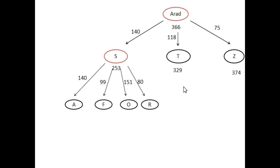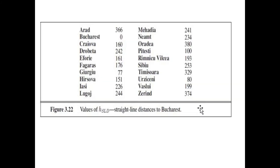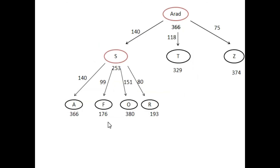We will calculate f(x) for each of these nodes. f(x) is equal to h(x). Looking at the heuristic values for nodes F, O, and R: the heuristic value for F is 176, the heuristic value for O is 380, and the heuristic value for R is 193. I write the heuristic values for all these nodes. We will now explore node F, because it has the lowest heuristic value.